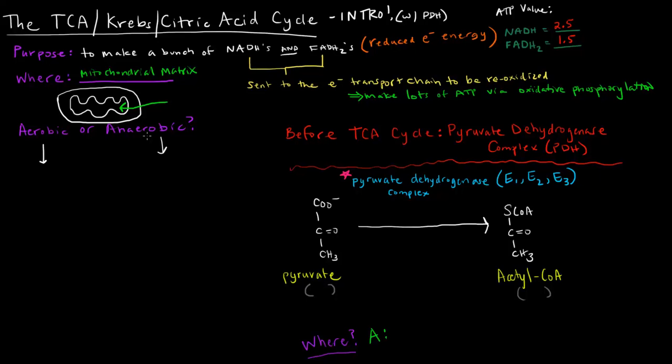The TCA cycle has actually eight steps. Now, each of those eight steps, none of them require oxygen. So in that sense, it can be considered anaerobic. And the reason why is none of the eight steps in the cycle actually use oxygen.